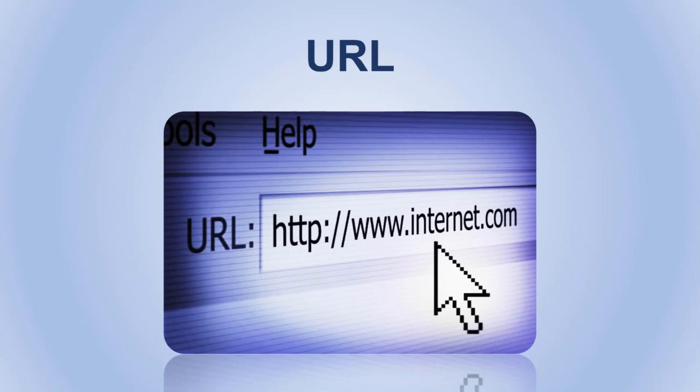We also have URL. URL is an abbreviation for Uniform Resource Locator, and it basically means a link. In SEO, the URL is the actual link that redirects you from one page or website to another. What's hidden under the Anchor Text that we just mentioned is the URL of the page that you are visiting.